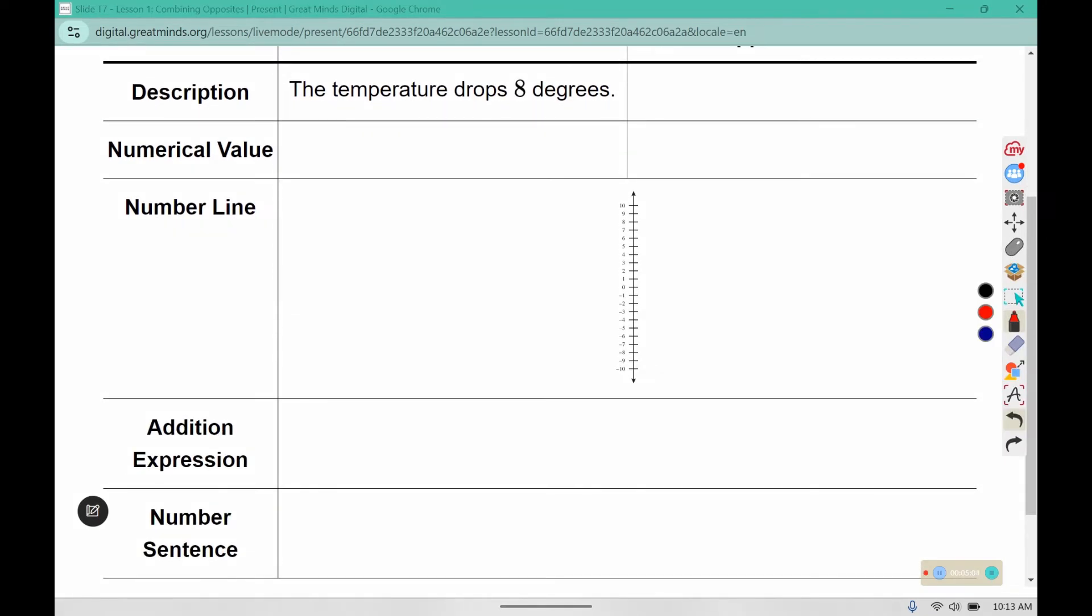In number 4, we have the temperature drops 8 degrees, so it would raise or increase 8 degrees. A drop would be negative 8 and an increase would be positive 8. So first we're going to drop 8. And then we're going to raise 8. And we return to 0.